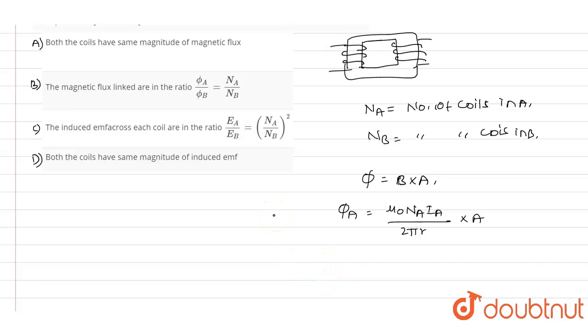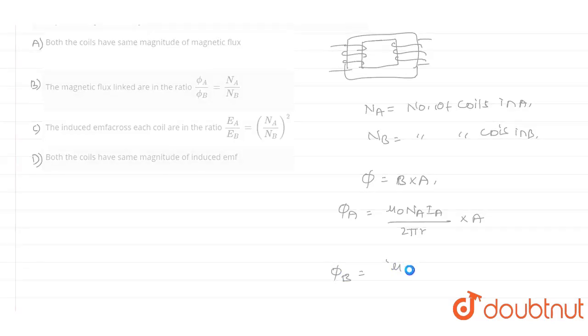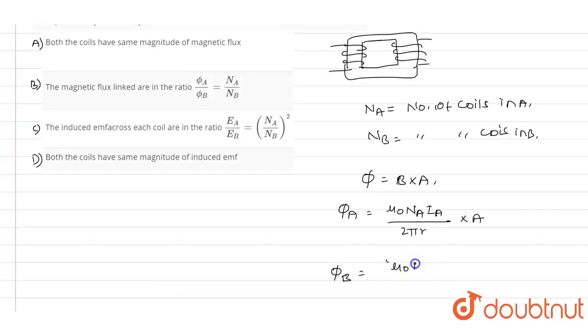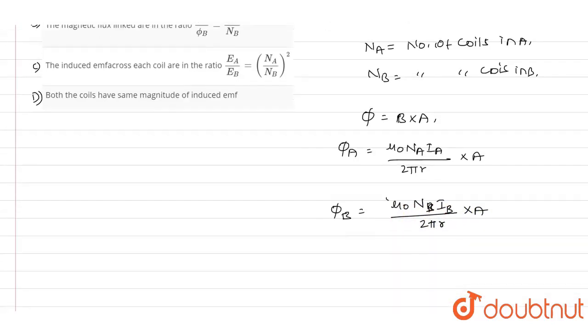μ₀ is the permeability value. And Φ_B in a similar way, the flux through the B coil will be equal to μ₀ times N_B times I_B divided by 2πr multiplied with capital A. So this is the Φ_B value.